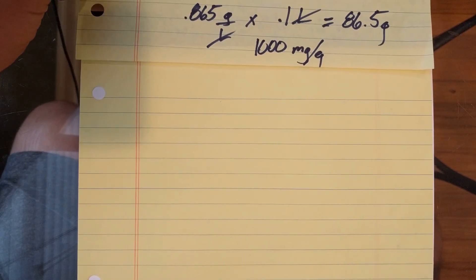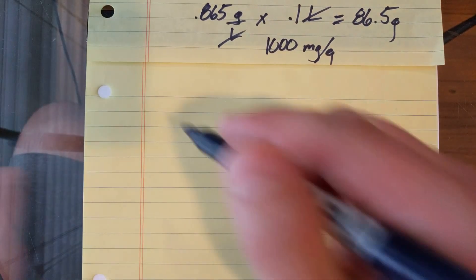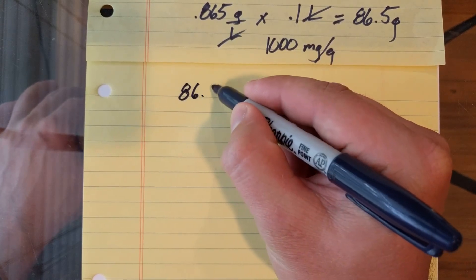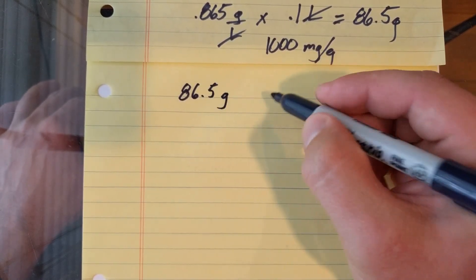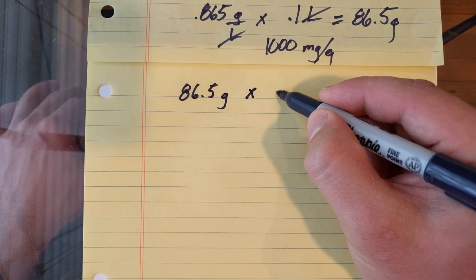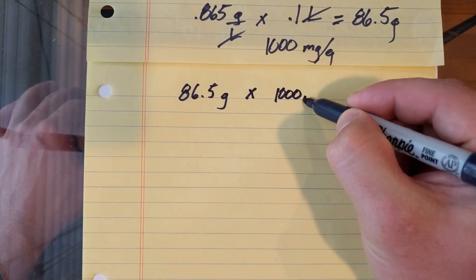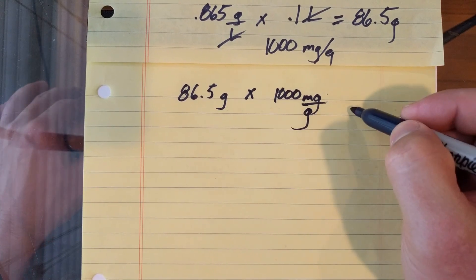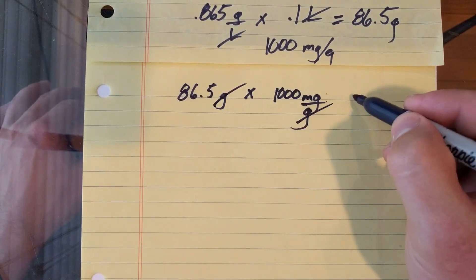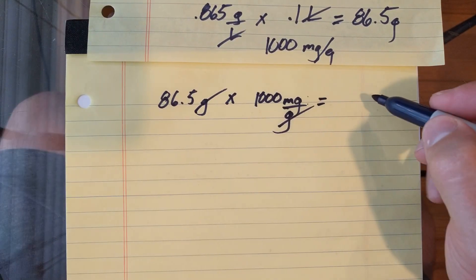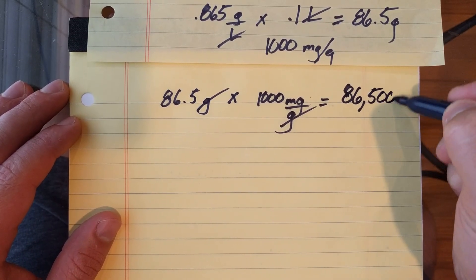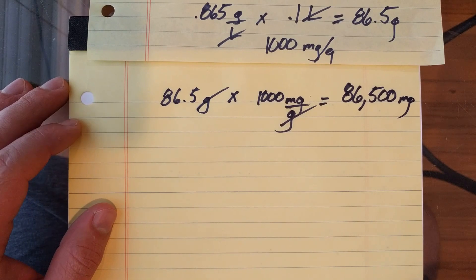Same sort of thing. So you've got your 86.5 grams of toluene. You multiply it by 1,000 milligrams per gram. Your grams will cancel, and you get 86,500 milligrams.